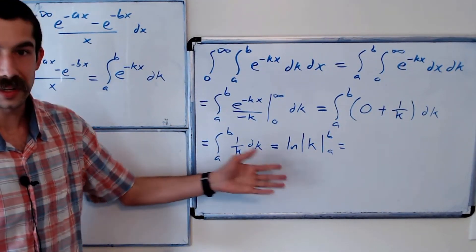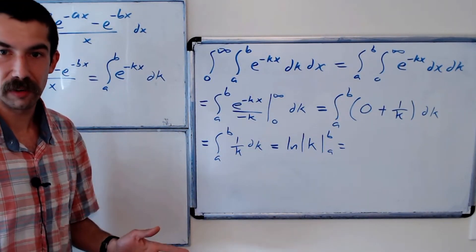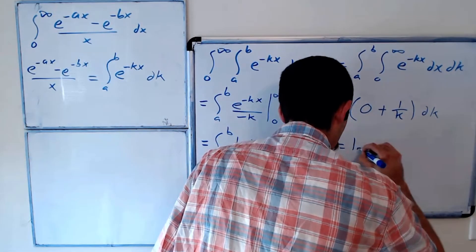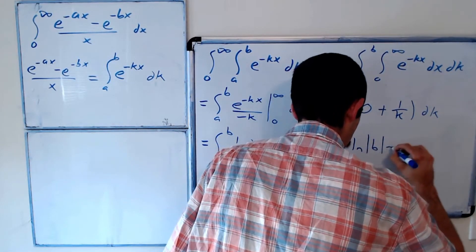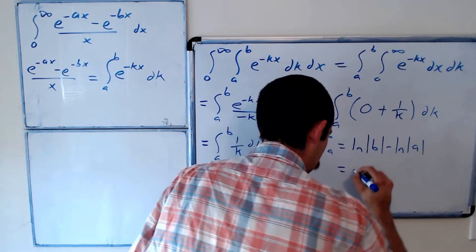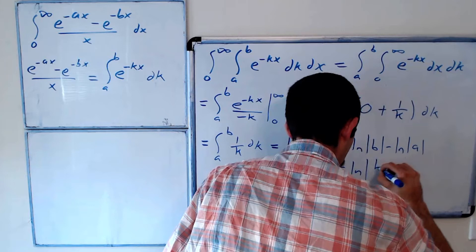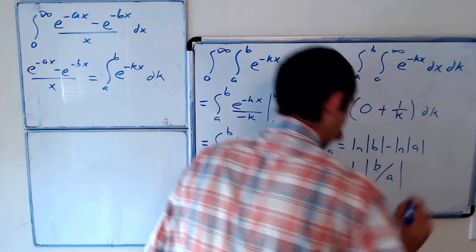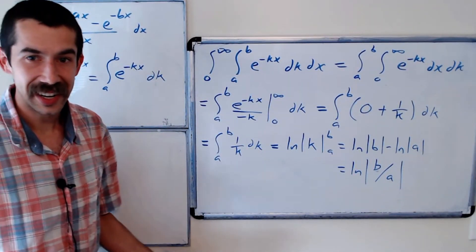But this is just the natural log of the absolute value of b minus the natural log of the absolute value of a, which is equal to the natural log of the absolute value of b over a, and that's it.